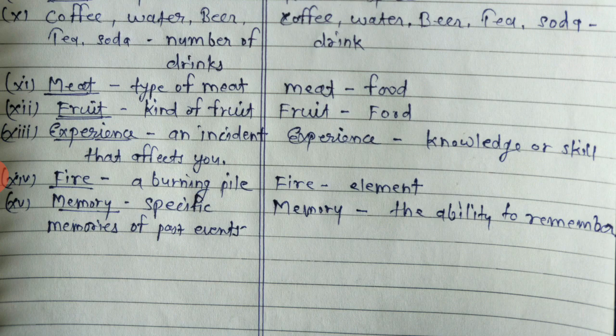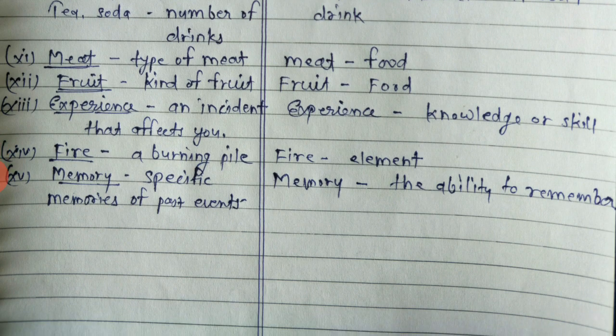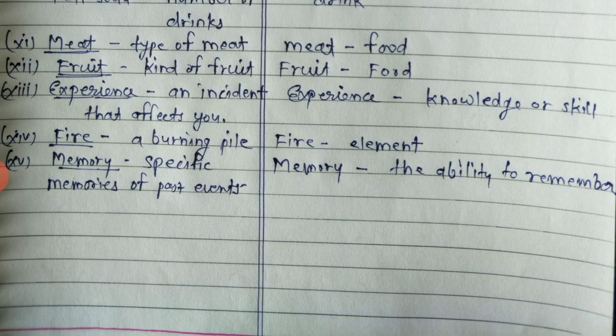'Fruit': countable as a kind of fruit, uncountable as food in general. 'Experience': countable when referring to a specific incident or event; uncountable when referring to knowledge and skill. 'Fire': both countable and uncountable. 'Memory': countable when talking about a specific memory or past event; uncountable when talking about the ability to remember.